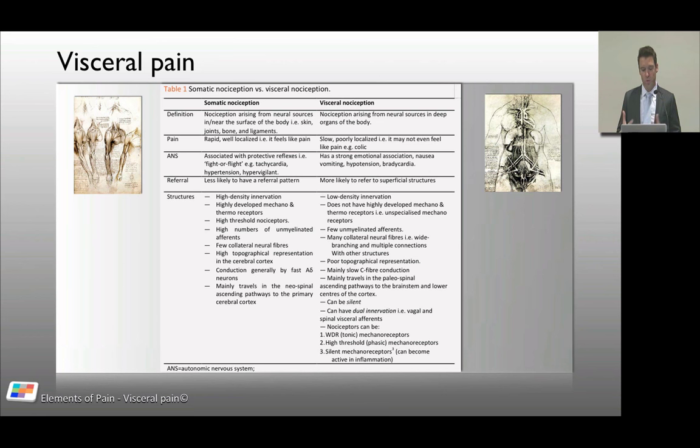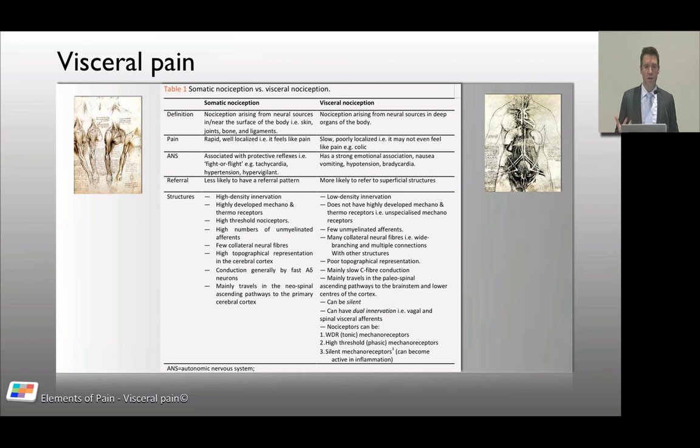Somatic nociception is pain arising from the surface structures of the body — skin, joint, bone, ligament. Visceral nociception is deeper, from the organs within the body. Somatic nociception is rapid, well-localized, and feels like pain, whereas pain from the viscera doesn't necessarily feel like pain. It can be slow, delayed, poorly localized, and things like colic can present as visceral nociception.